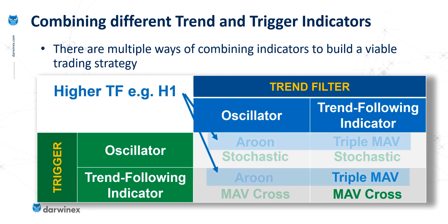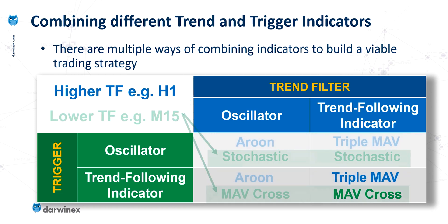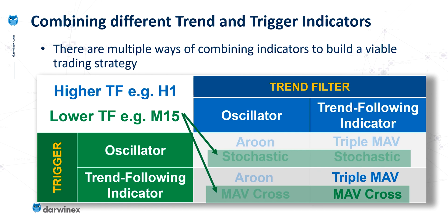These usually tend to work best when the regime filter indicators operate on a higher timeframe — for example, the H1 — relative to the timeframe you're using for your trigger, such as an M15 chart. Equally, this could be H4 for the trend and H1 for the trigger, or a 20-minute chart for the trend and five minutes for the trigger. I tend to stick with this ratio of 4 to 1, but that depends on the number of periods you're using for your indicators, so you'd need to backtest to find the best for you.